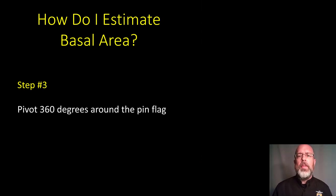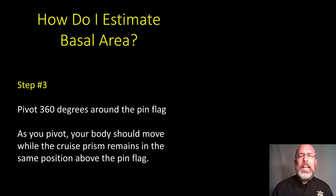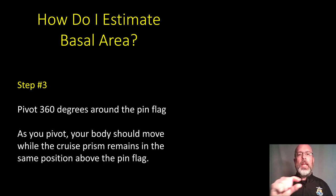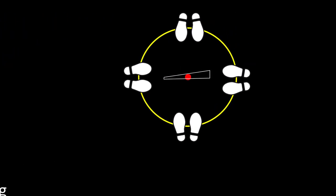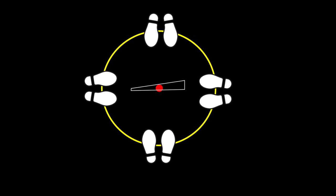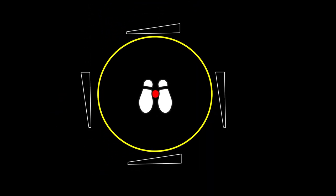Step three is to pivot 360 degrees around that pin flag. Now this is where a common mistake happens. As you pivot, your body should move and the cruise prism should stay over top of the flag the whole time — as opposed to standing over the pin flag and rotating the cruise prism. You can see in the graphic: the person walks around the pin flag keeping the cruise prism right over the top of the flag. What you don't want is to stand over the pin flag and have the cruise prism rotate around that circle, because the prism will then be at different distances from the trees, which is not what you want for your estimate.